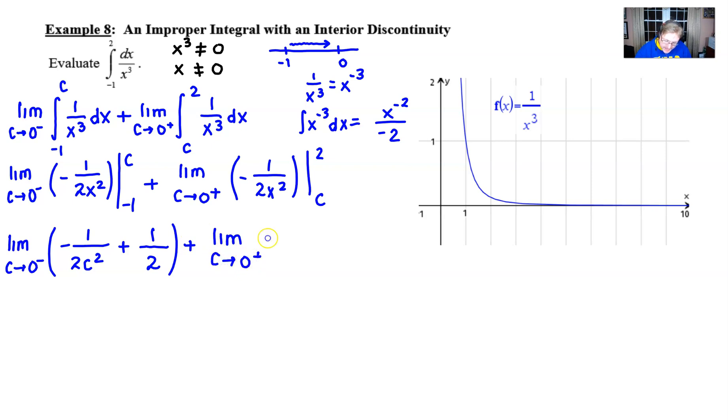We'll do the same thing with our second expression. C approaches 0 from the positive side. This time, plug 2 in. Negative 1 over 2 times 4 would be 8. Minus negative. Plug C in. And I have 1 over 2C squared. Now, what comes next? A couple of things.